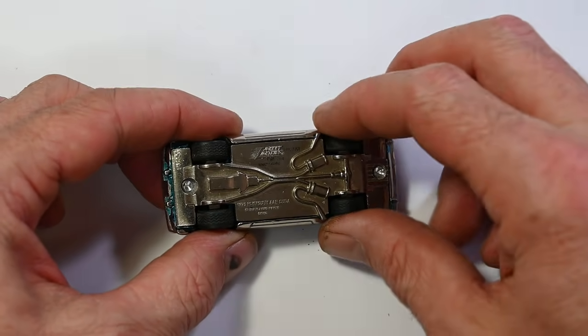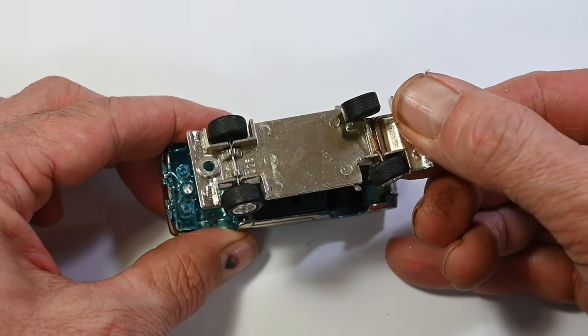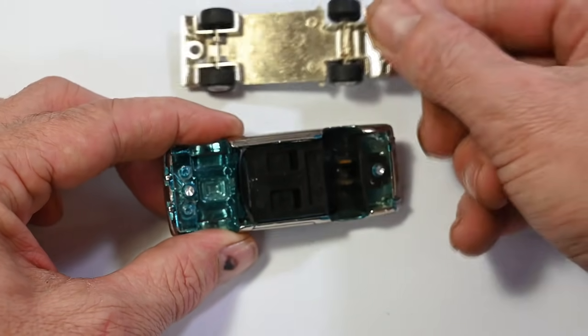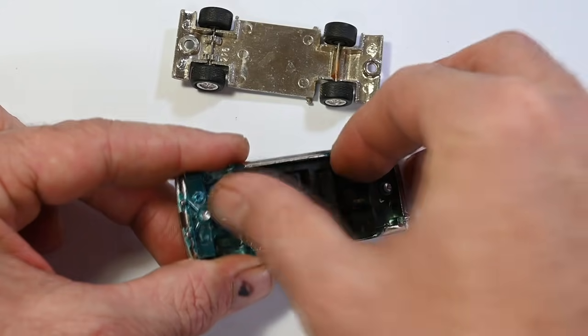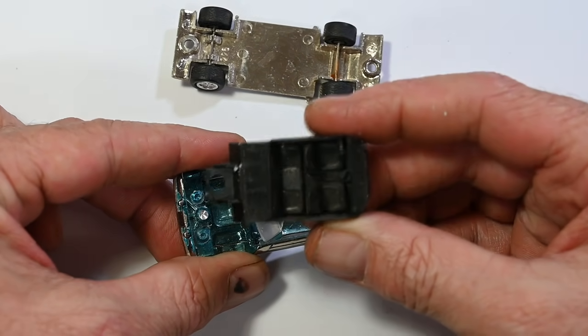So I'll pop the bottom off. It's a really nice solid base, solid chunk of metal. The rear wheels are loose and the front ones are pinched in there.